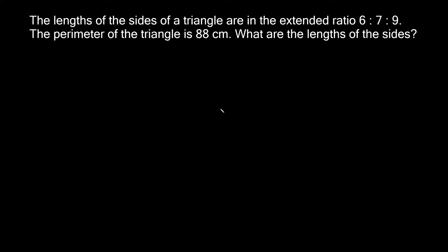Alright, so it's basically telling us that we have this random triangle right here. And then it says that we can relate all three sides using this ratio. And since we have three different numbers in our ratio, that's why it's called an extended ratio rather than just a regular ratio.